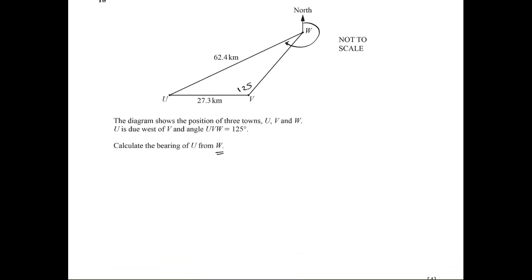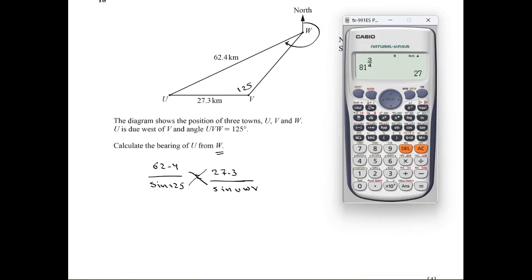62.4 over sine 125 equals 27.3 over sine UWV. Using cross multiplication with a calculator...